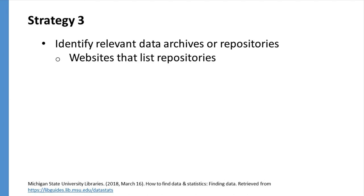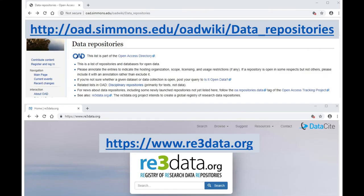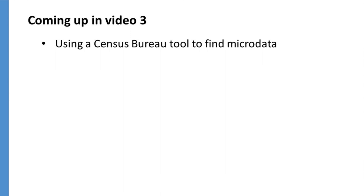If these repositories don't include the data you're looking for, you can also visit two websites which link to archives and repositories from a variety of disciplines. These websites are the Open Access Directory and RE3 data. Each archive or repository linked to within these resources will have different requirements for visitors to search for and download data. Coming up in video 3, I'm going to demonstrate how to use one of the Census Bureau's tools to find microdata.